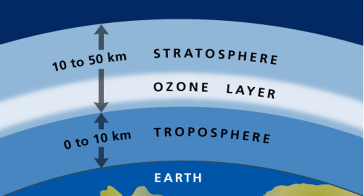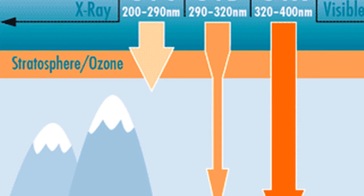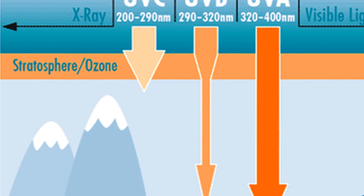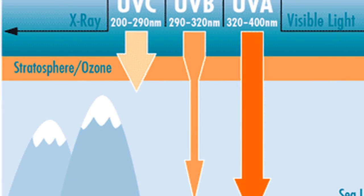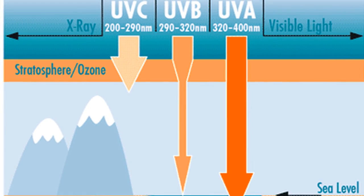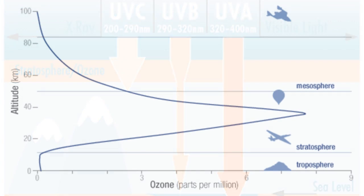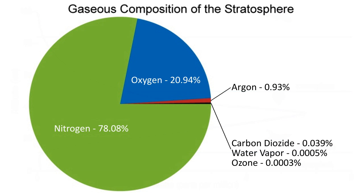The ozone layer, or ozone shield, is a region of Earth's stratosphere that absorbs most of the sun's ultraviolet UVB radiation. It contains a high concentration of ozone O3 in relation to other parts of the atmosphere, although it is still small in relation to other gases in the stratosphere.